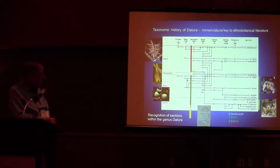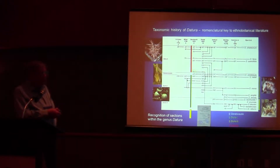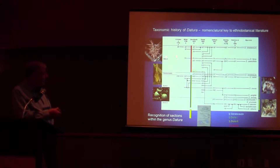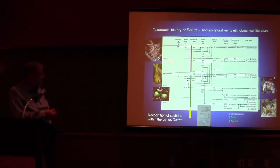The sections were essentially established by Bernhardt back in 1833 as part of his pharmacological work on Datura, organized into three sections: Datura, Stramonium, and Dutra.